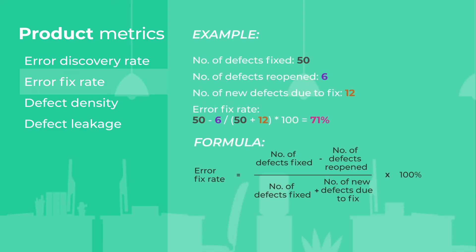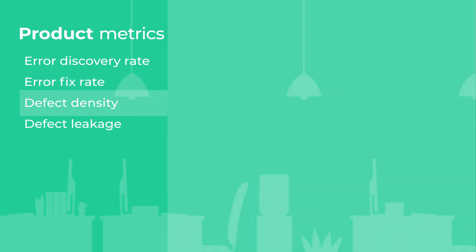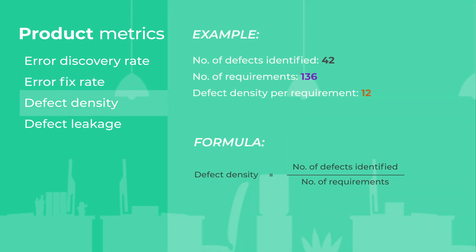Error fix rate allows estimating the build quality in terms of defect fixing, though the calculations are a bit more complicated. Another widely used metric is defect density — the number of confirmed defects divided by the size of the software. The size of software can be measured in lines of code or number of requirements, as shown in the on-screen example.